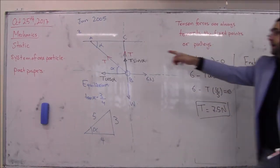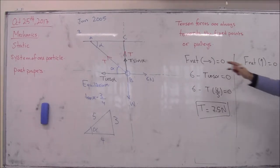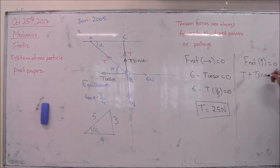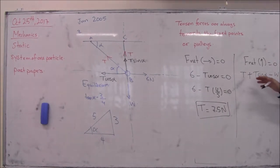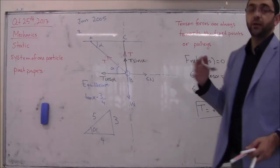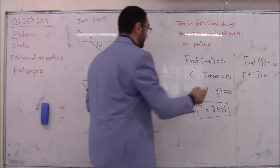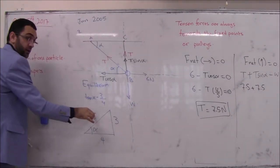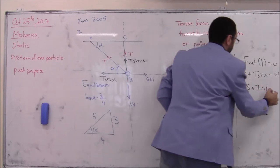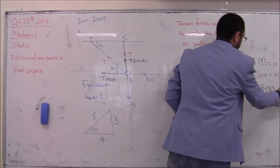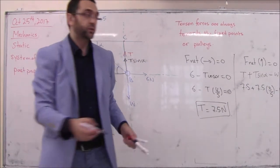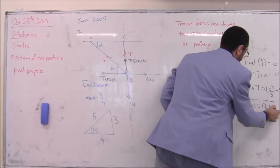To find weight, take resultant force along the y-axis equals zero: T plus T sine alpha minus weight equals zero. Sine alpha equals 3/5. So weight equals 7.5 plus 7.5 × (3/5) = 12 Newtons.